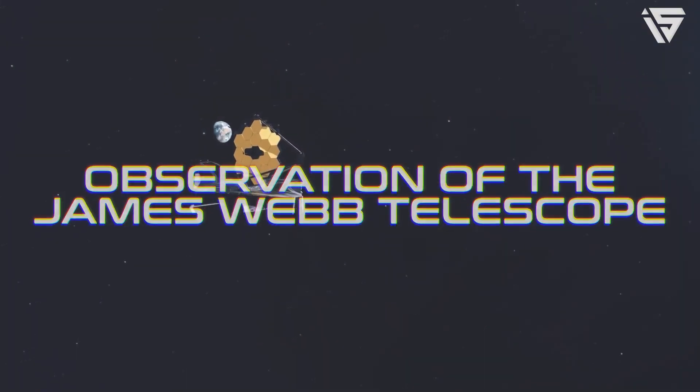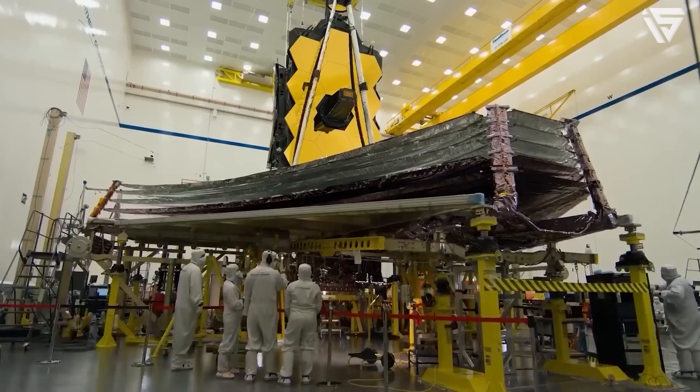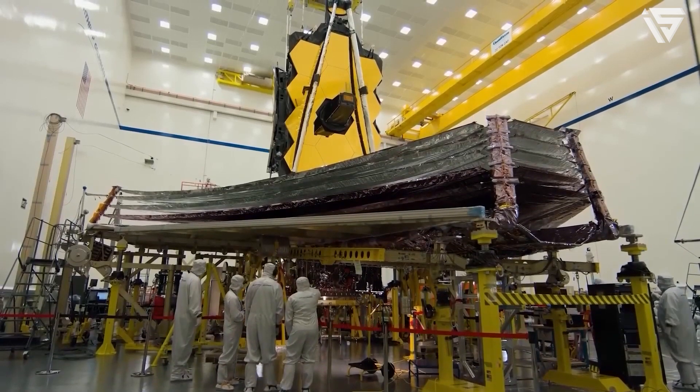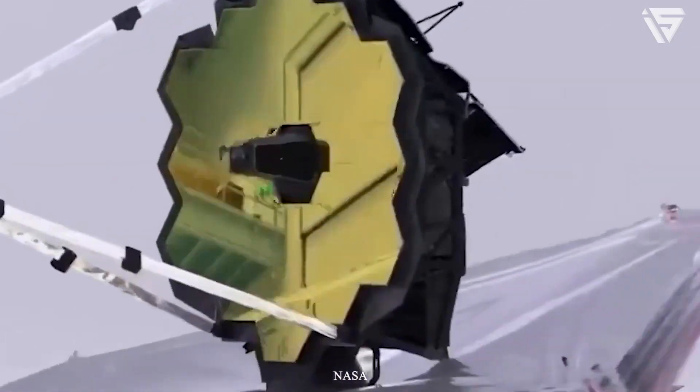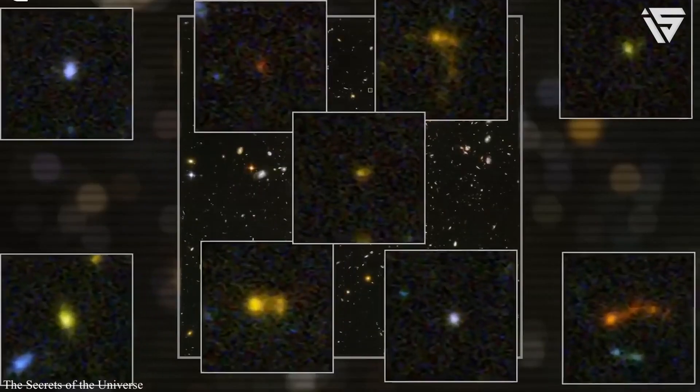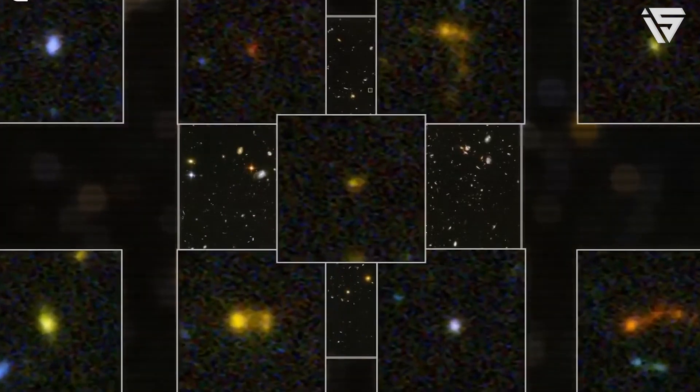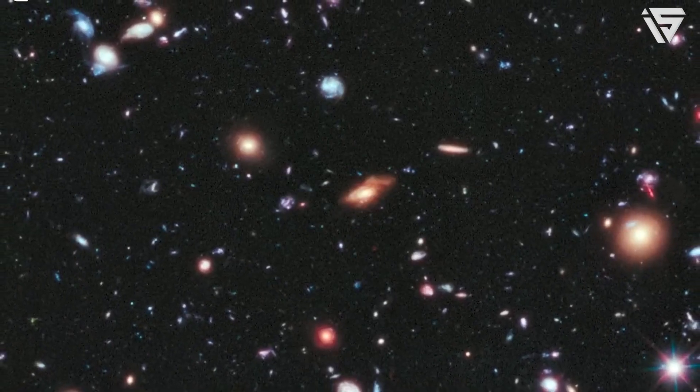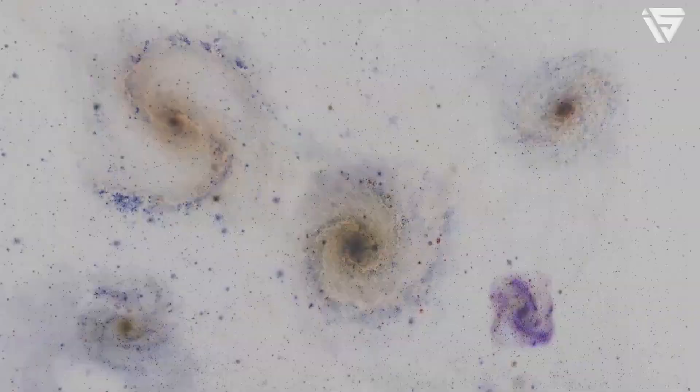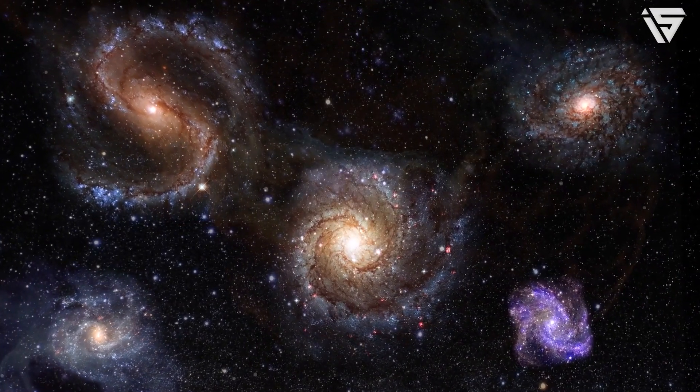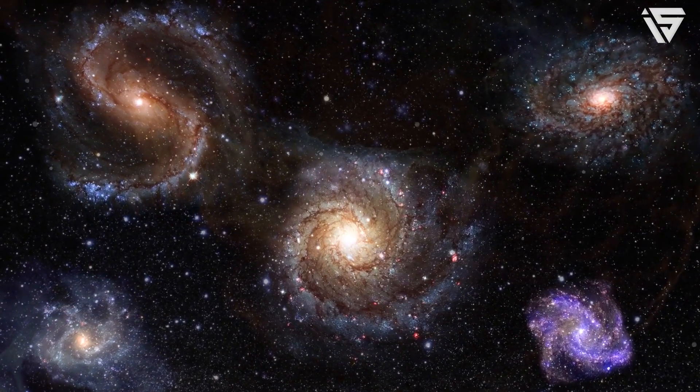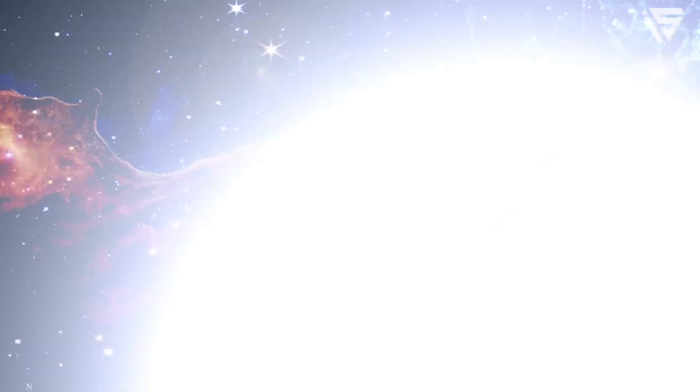Observation of the James Webb telescope. What makes us puzzled is that even if everything available was taken to form stars, you would still not achieve in getting a star that big in such a short time. Several observations of the James Webb telescope are challenging to explain with the Lambda CDM model, which is considered to be the standard model of cosmology.